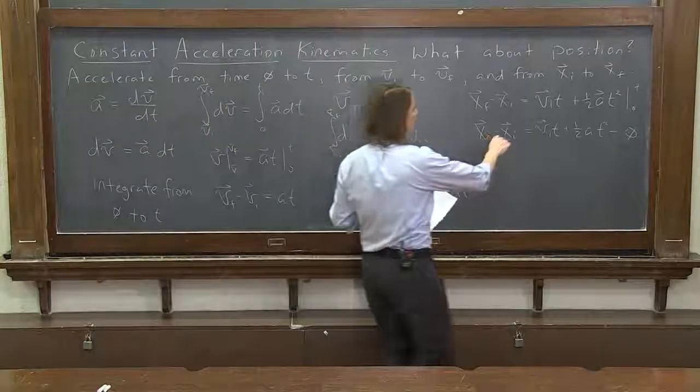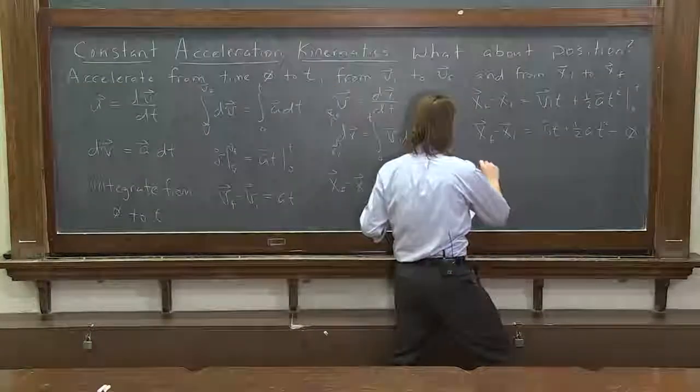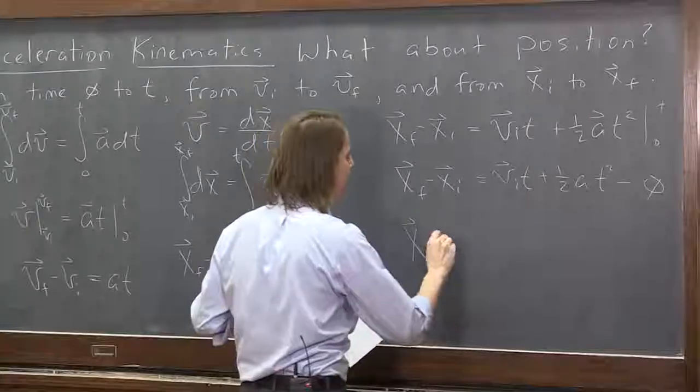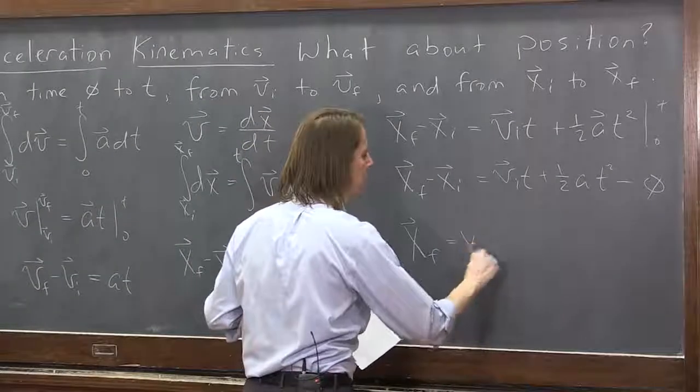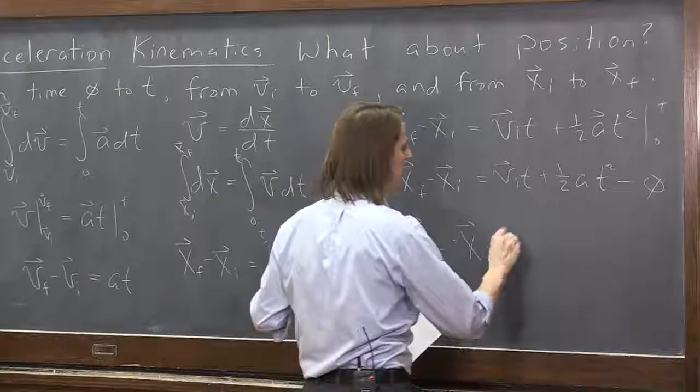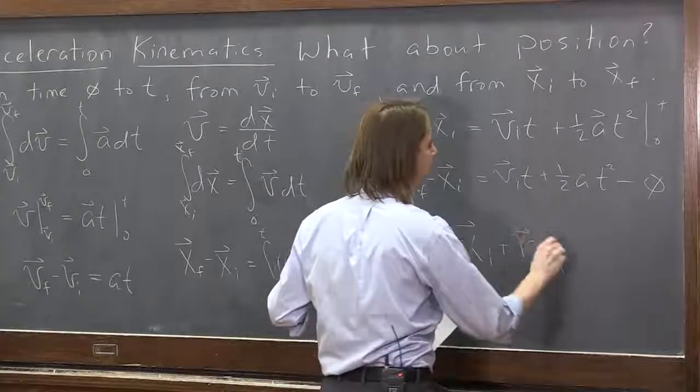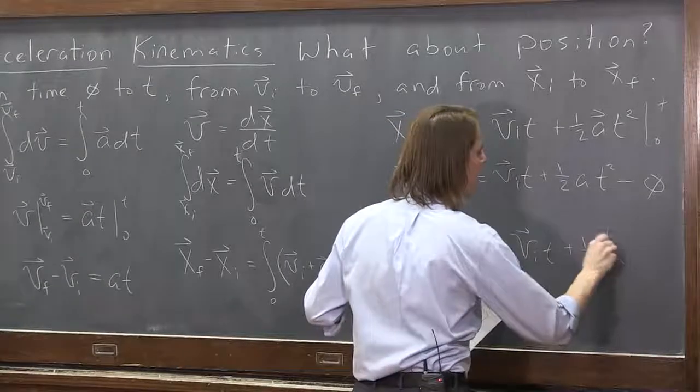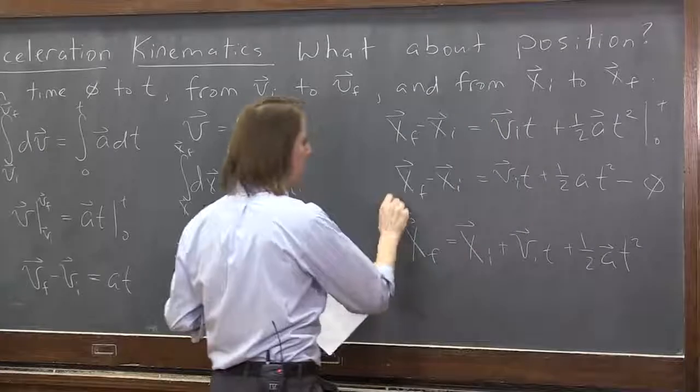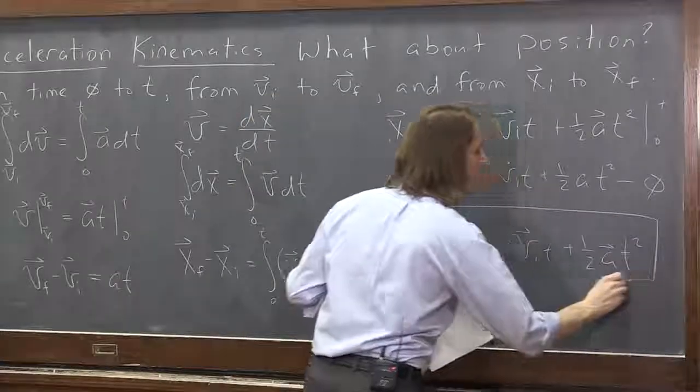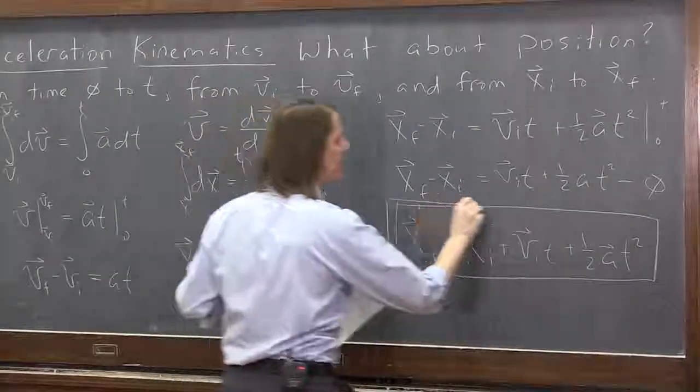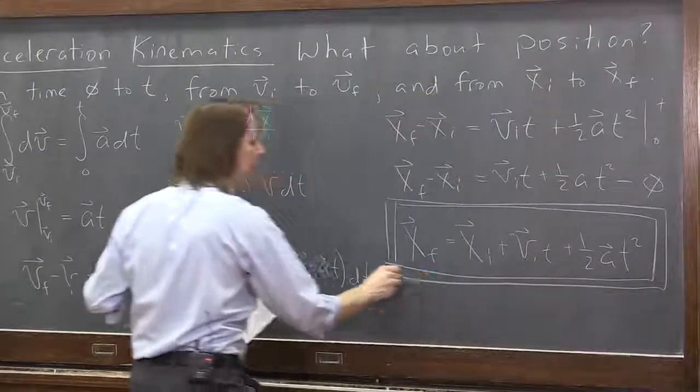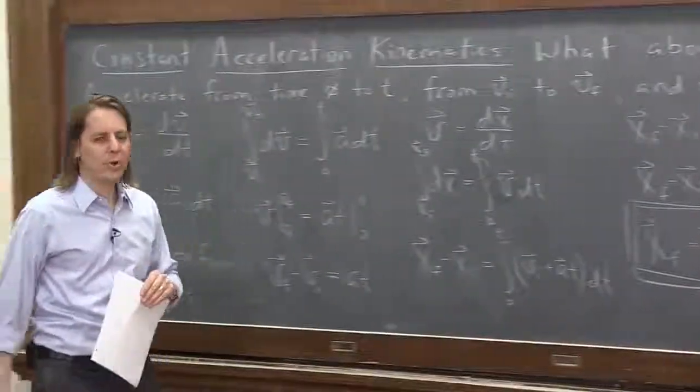So this is the final equation. We could move the xi over here to get sort of the most normal form. The final position is the initial position, plus vit, plus 1 half at squared. Possibly the most famous equation in all of simple 1D kinematics.